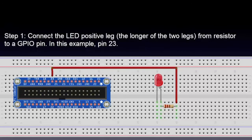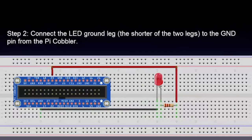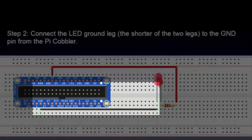Step 1: Connect the LED positive leg — the longer of the two legs — from a resistor to a GPIO pin. In this example, it's pin 23. Step 2: Connect the LED ground leg — the shorter of the two legs — to the GND pin from the Pi cobbler.